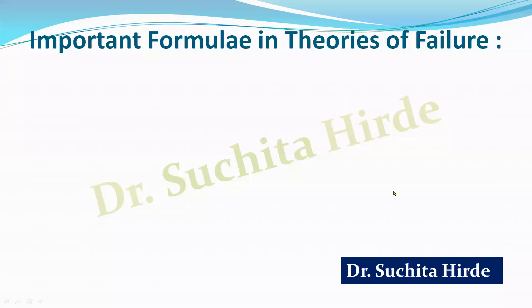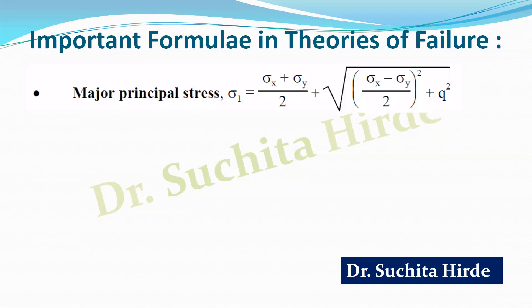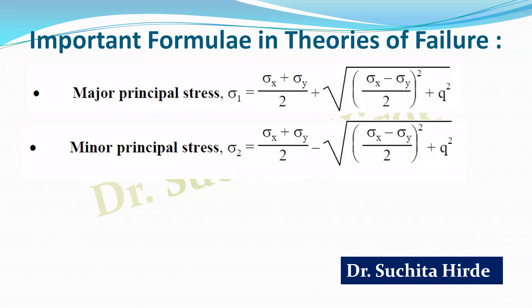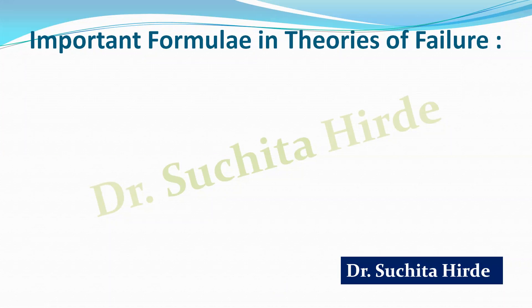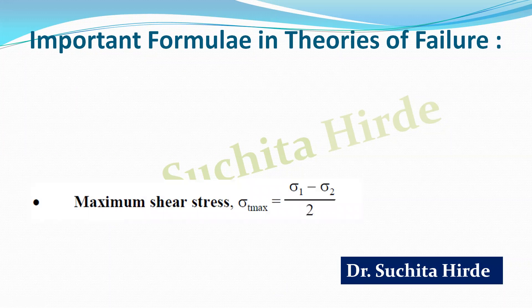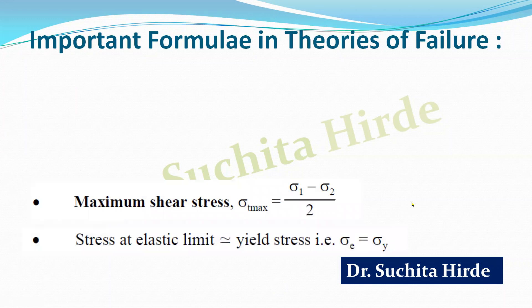As all these theories are based on principal stress, we must know the formulae used to calculate principal stress and maximum shear stress, which we have already discussed in the previous video. The stress at elastic limit is denoted by sigma_e, which is equal to sigma_y, calculated using a tension test on the member in the uniaxial direction.